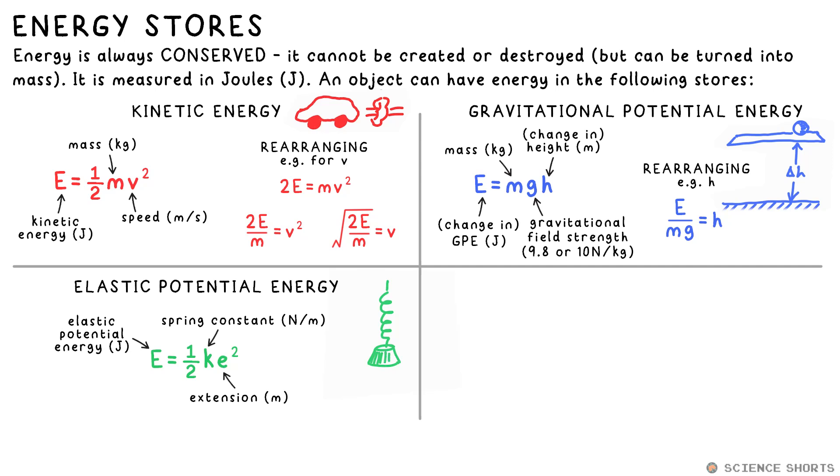Elastic potential energy is what is stored in, say, a spring. That's equal to half ke squared, that's half times the spring constant in newtons per meter, sometimes called stiffness, times extension, that's how much further the spring has stretched from its original length.